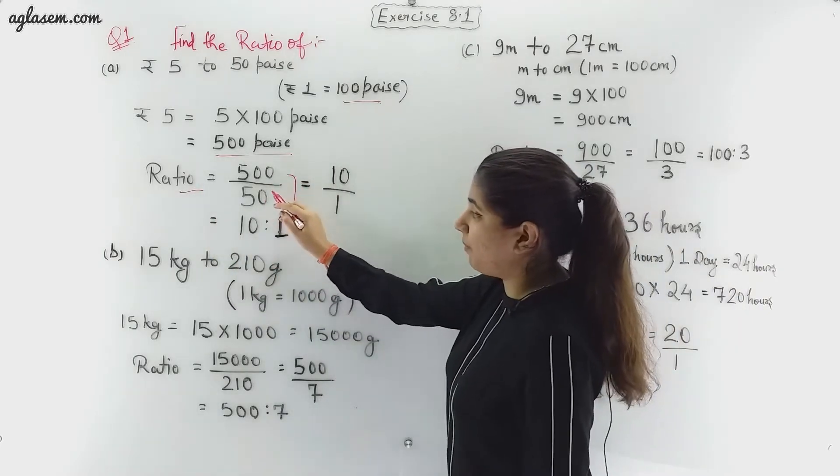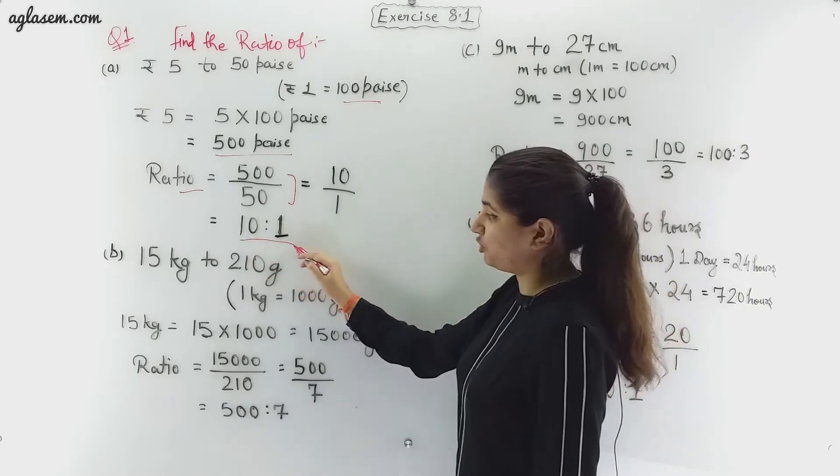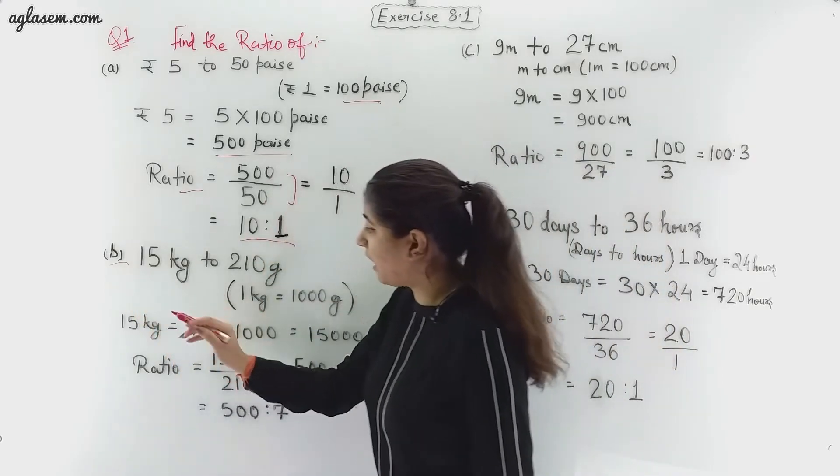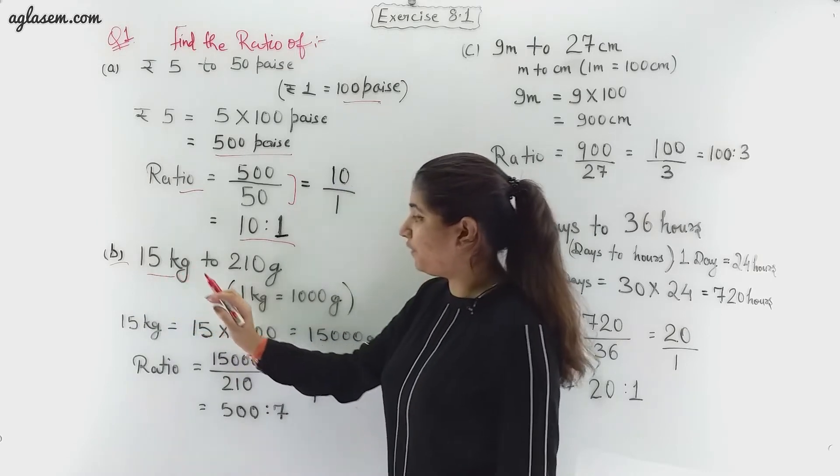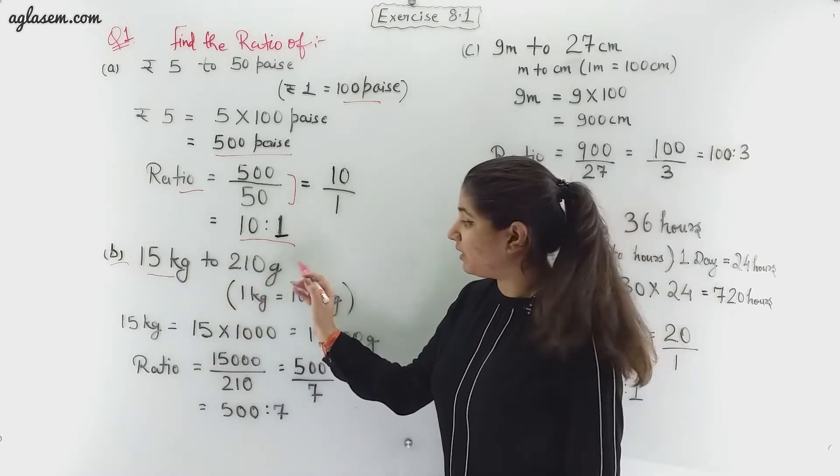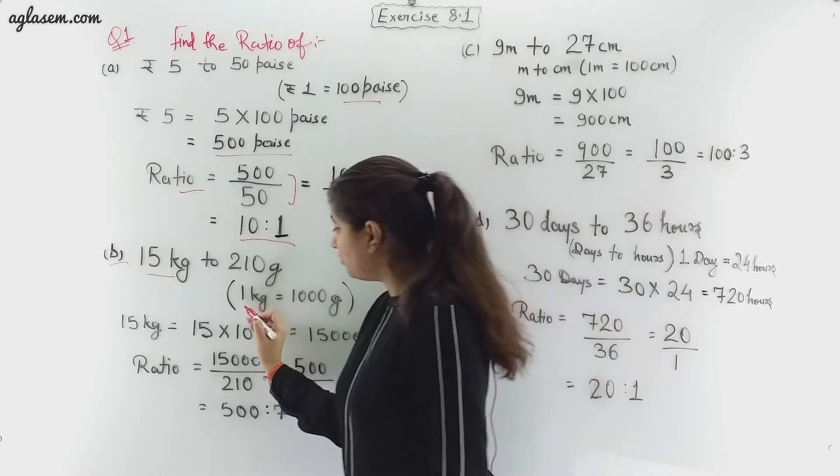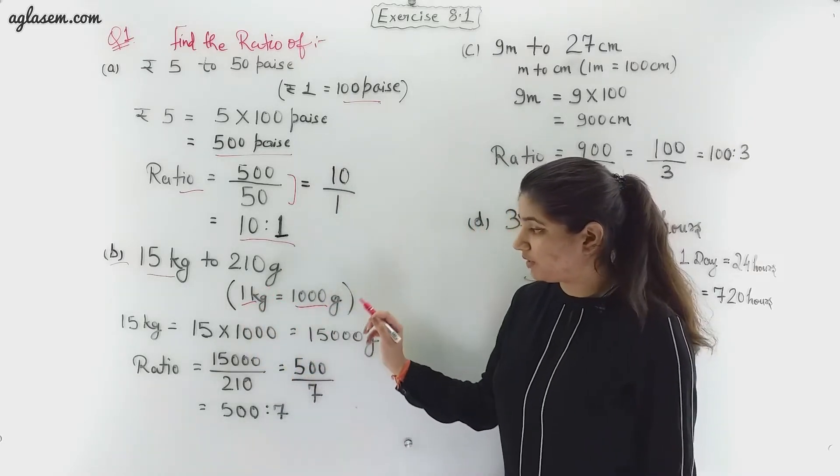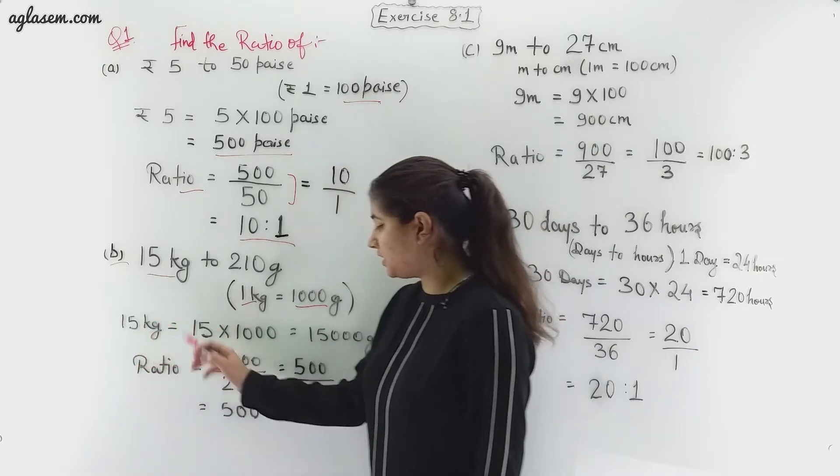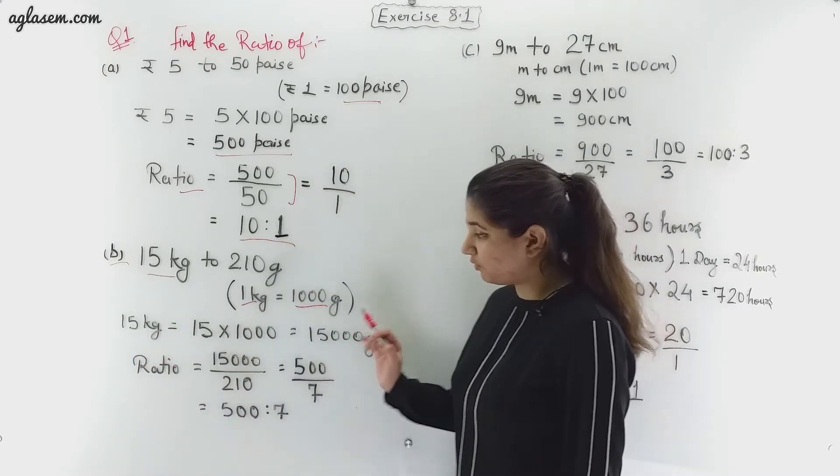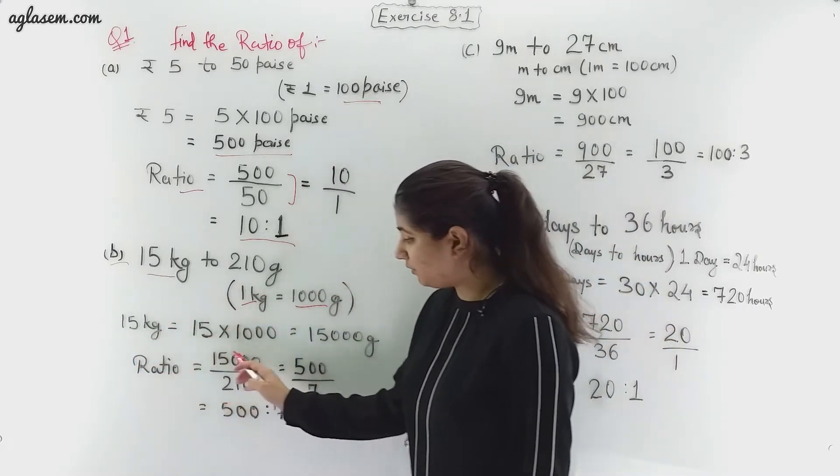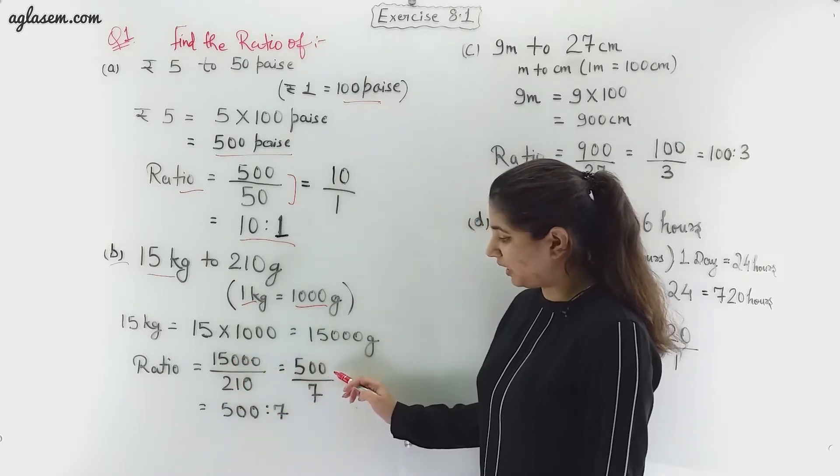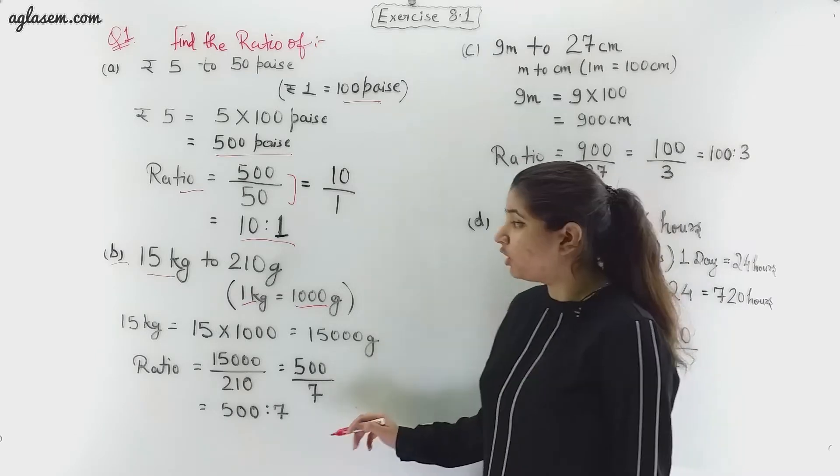Now let's move to part (b). Similarly, here we have to find the ratio of 15 kg to 210 gram. To do the conversion we know that 1 kg is equal to 1000 gram. So accordingly, 15 kg is equal to 15000 grams. To find the ratio we have to divide 15000 upon 210, so we get the ratio 500 divided by 7.